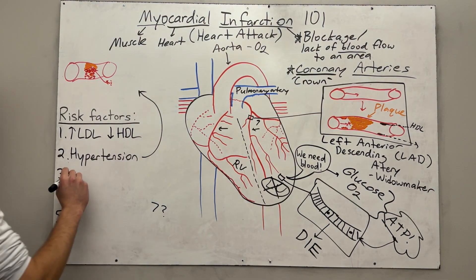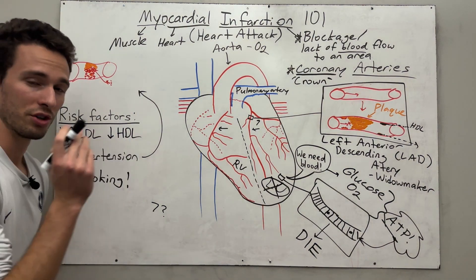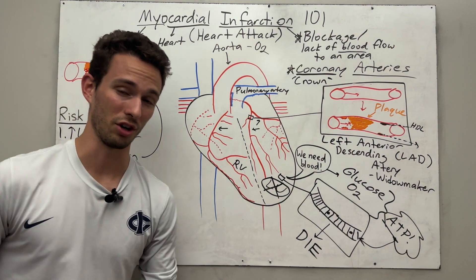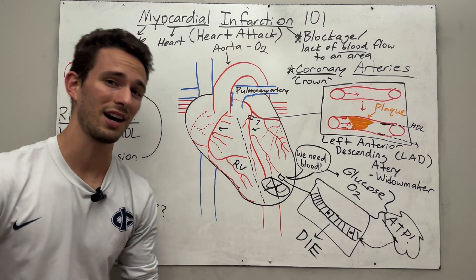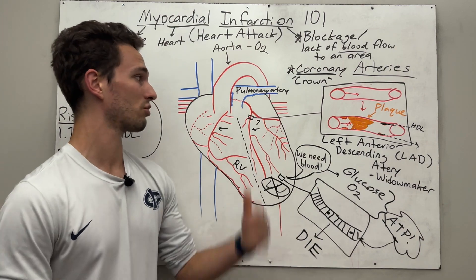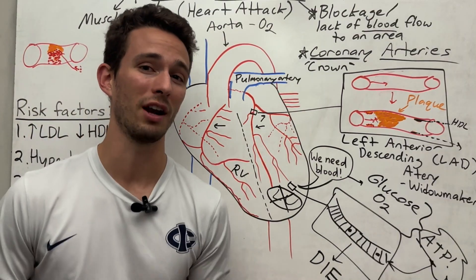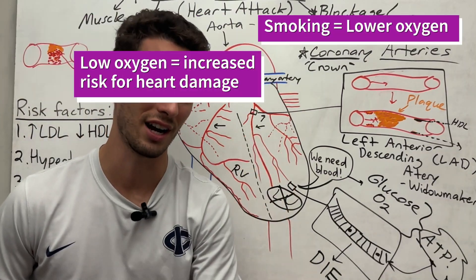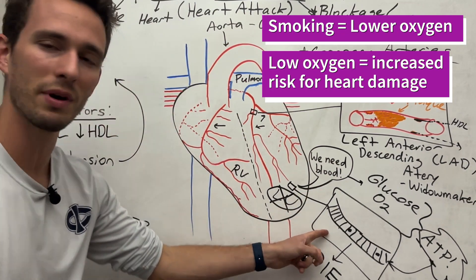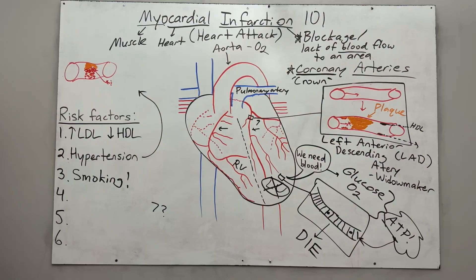The third risk factor is smoking. Smoking deals with basically every part of your body, including your lungs. Whenever you get toxins into your bloodstream from smoking, they can travel to arteries and cause damage. Not only that, but smoking impairs your oxygen content in general — you can't get as much oxygen in, so you're not feeding these muscle cells as properly as they should be.